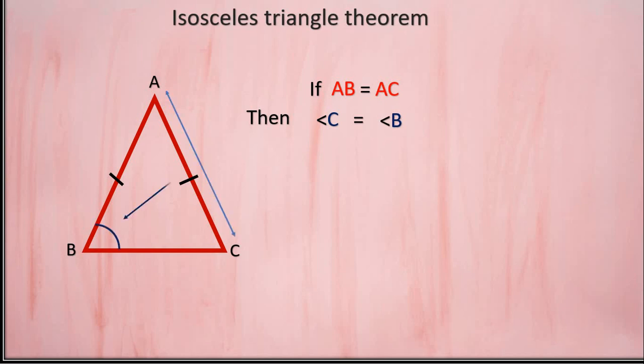The angle opposite to one equal side will be equal to the angle opposite to the other equal side. If two sides in a triangle are equal, then the angles opposite to them are also equal. Let us do an activity to prove this.